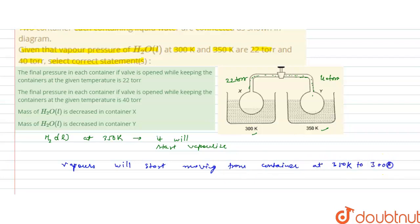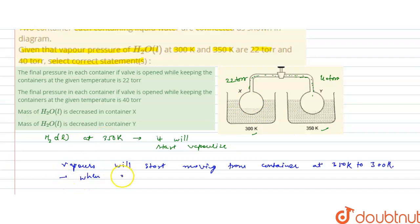At some point, all the vapor from the liquid vaporizes, and the vapors will be in the container at 300 kelvin. When all the water is completely vaporized from the 350 kelvin container, all the water is completely vaporized.